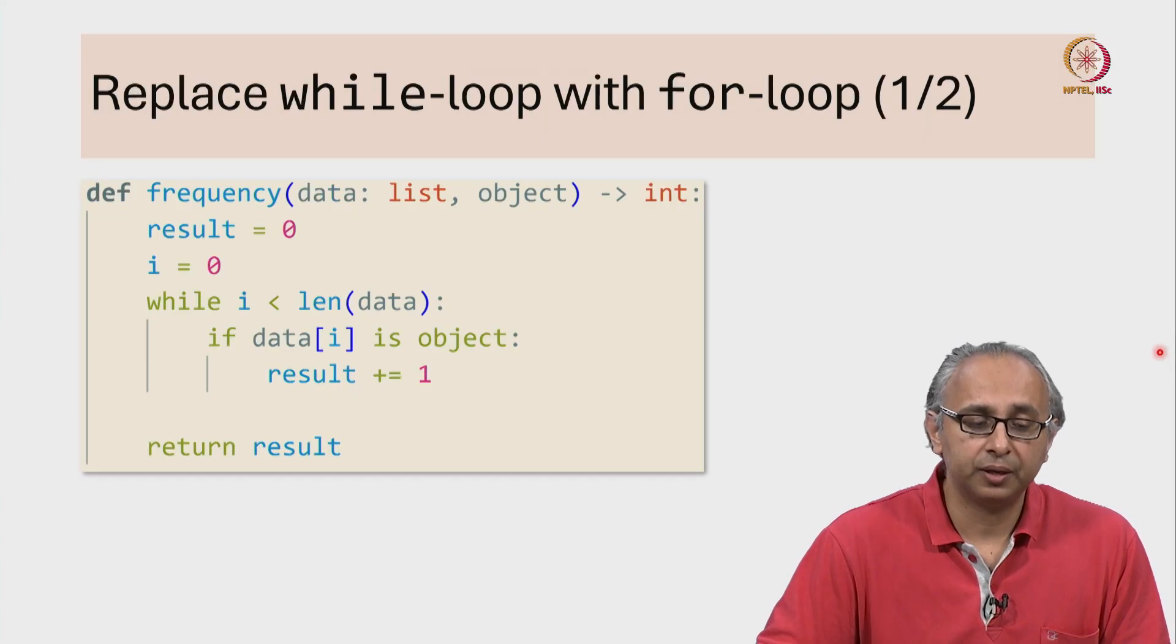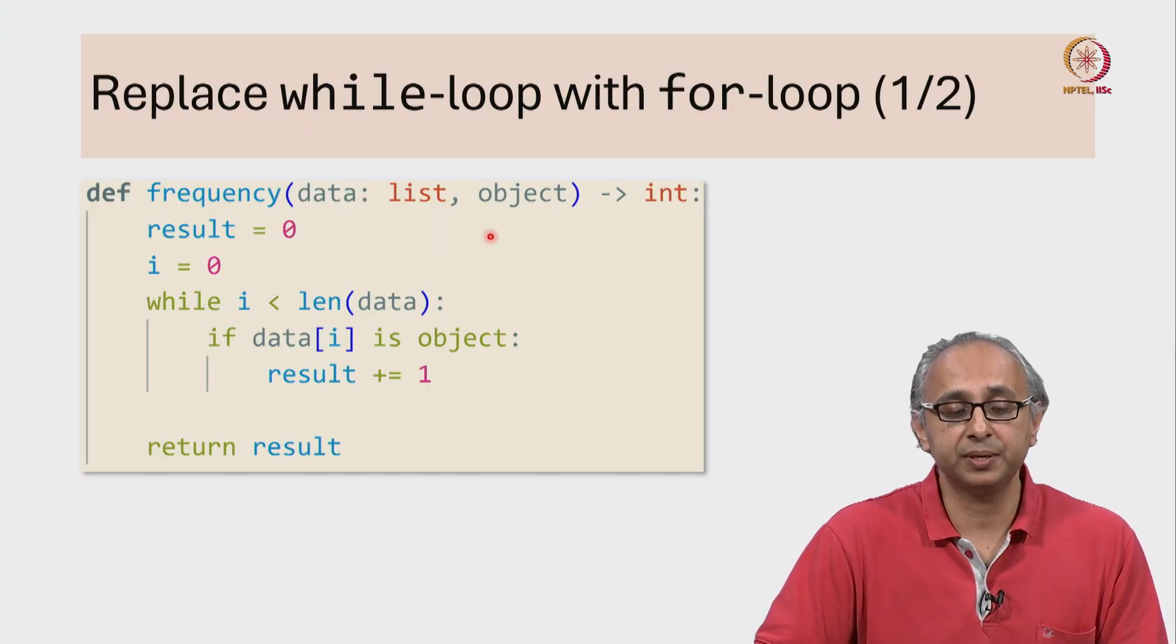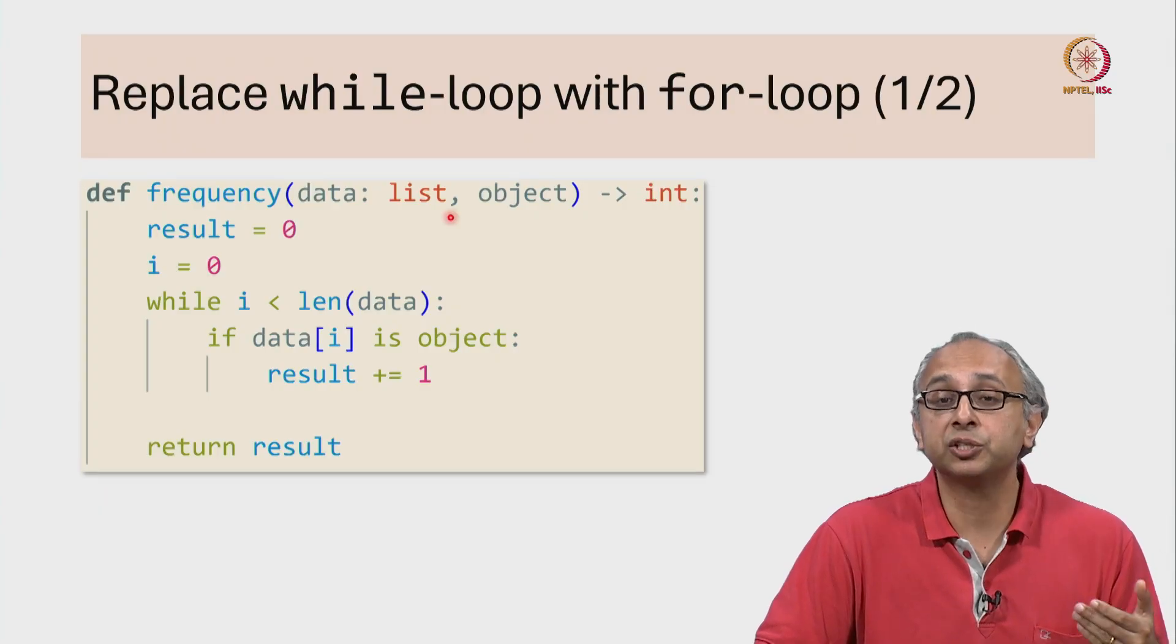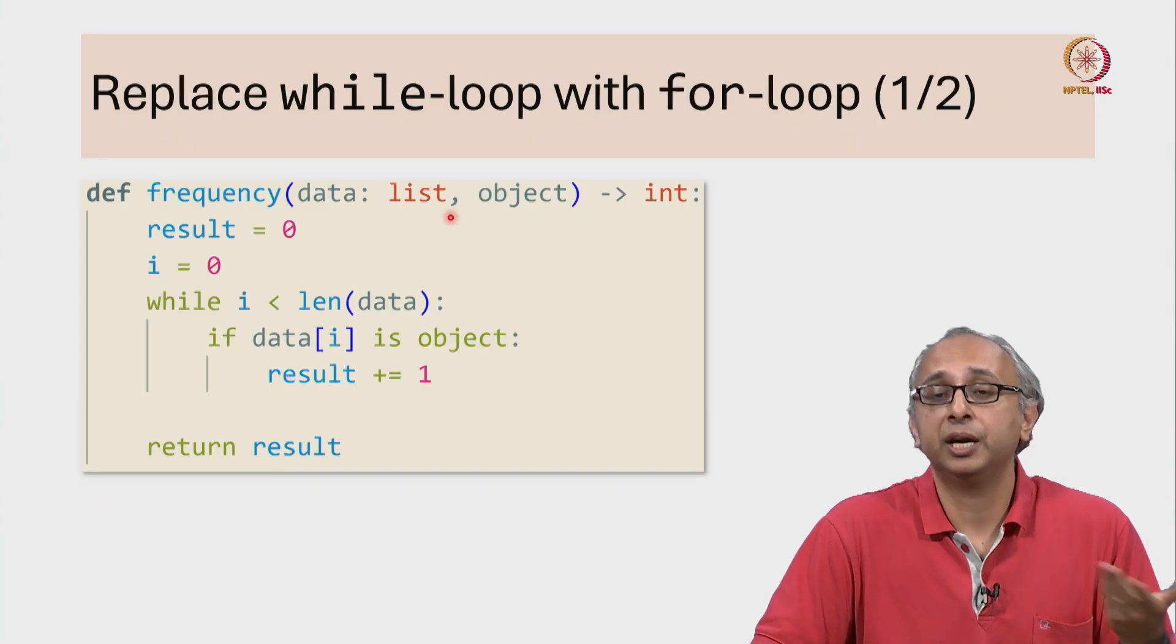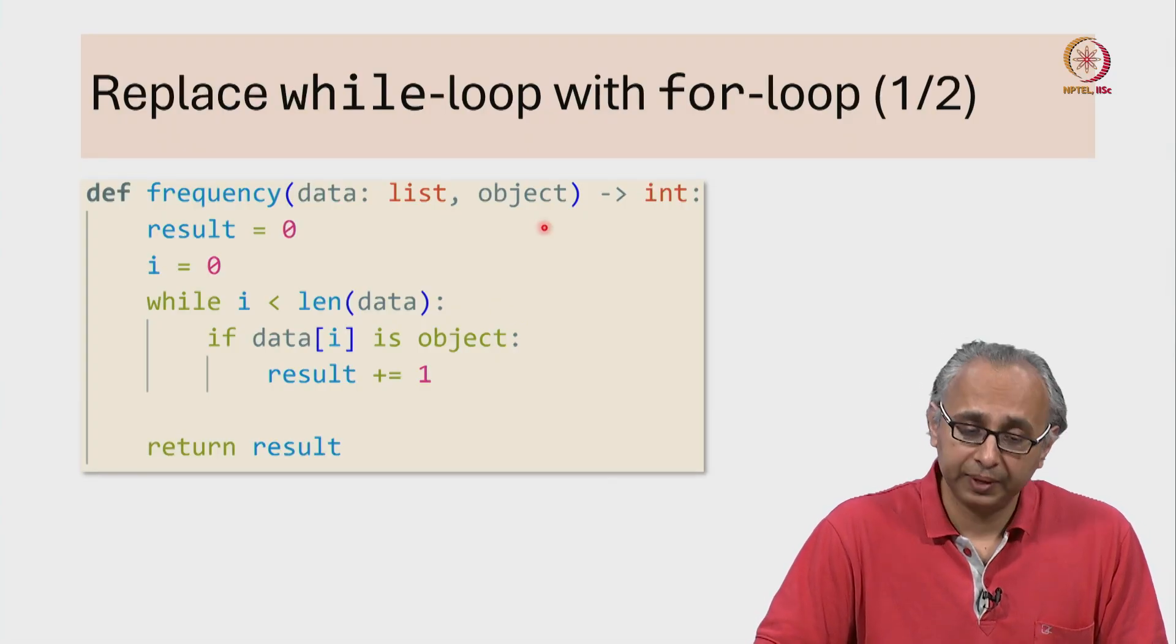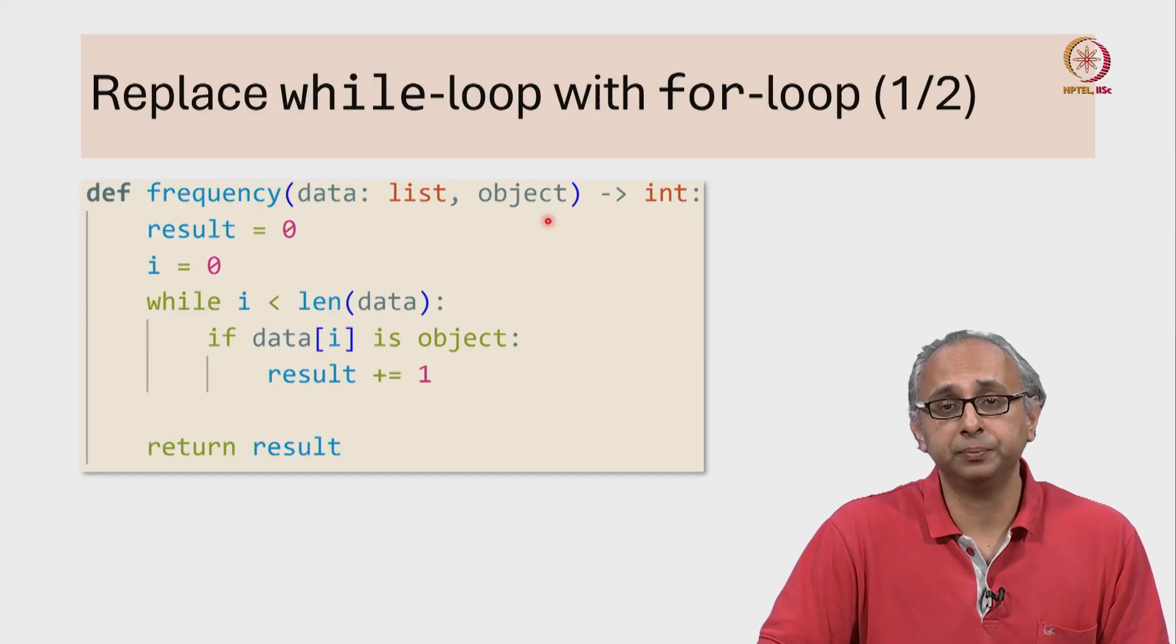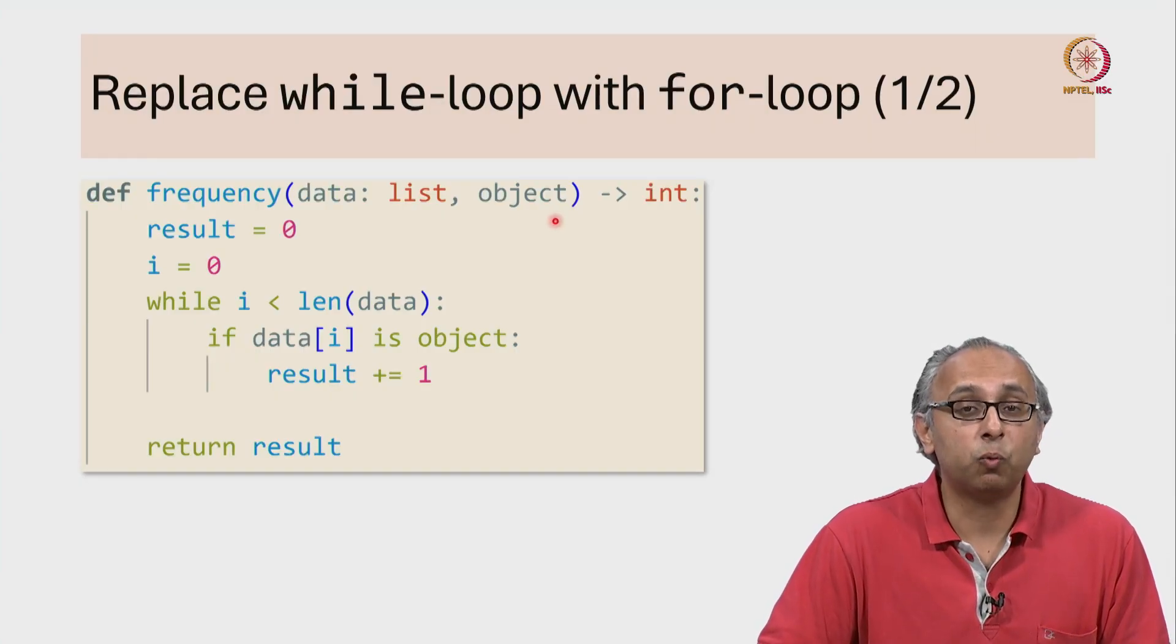So in this function, we take two parameters: data which is a list—notice I haven't said a list of what, so this could be a heterogeneous list—and then some object. I haven't said what type this object is. So once again, this object could be of any type.